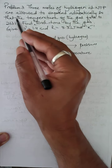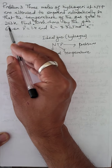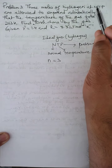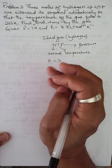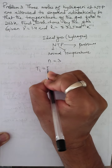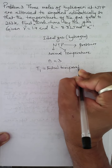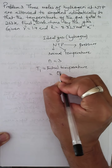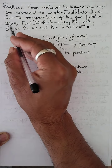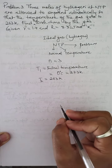The three moles of hydrogen at NTP are allowed to expand adiabatically so that the temperature of the gas falls to 263 Kelvin. The gas is initially at normal temperature, which is 273 Kelvin or 0 degree Celsius — this is the initial temperature T1. The final temperature T2 is 263 Kelvin.